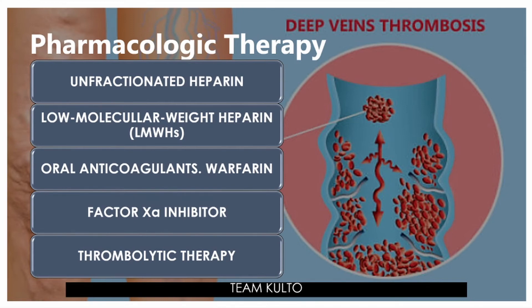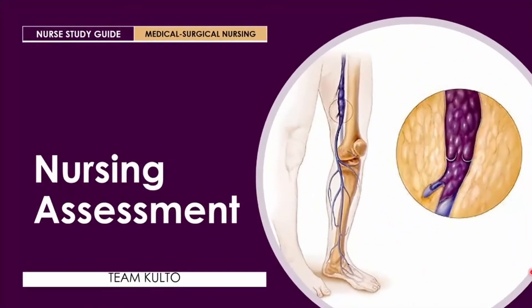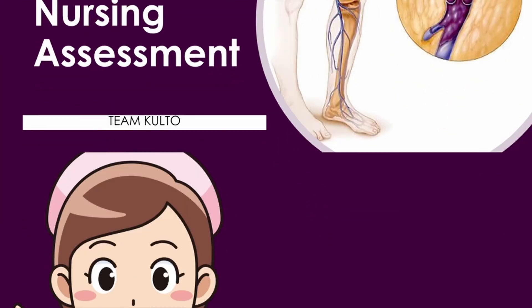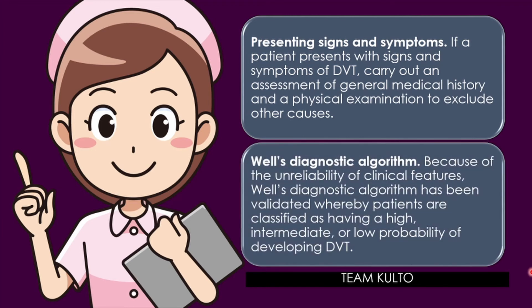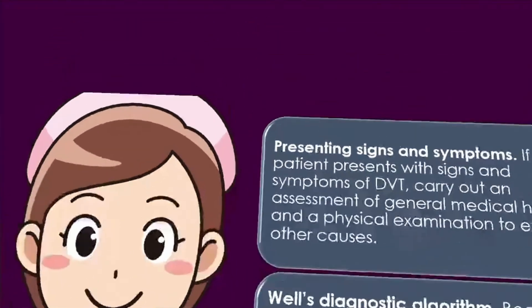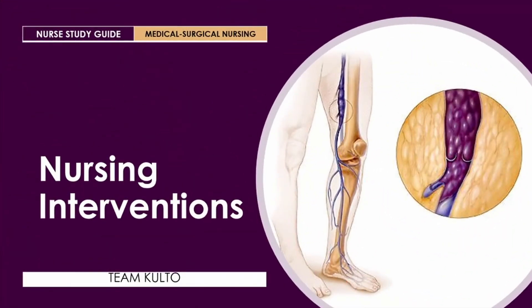For nursing assessment of patients with deep vein thrombosis: evaluate presenting signs and symptoms. If a patient presents with signs and symptoms of DVT, carry out an assessment of general medical history and physical examination to exclude other causes. Because of the unreliability of clinical features, Well's diagnostic algorithm has been validated whereby patients are classified as having a high, intermediate, or low probability of developing DVT.